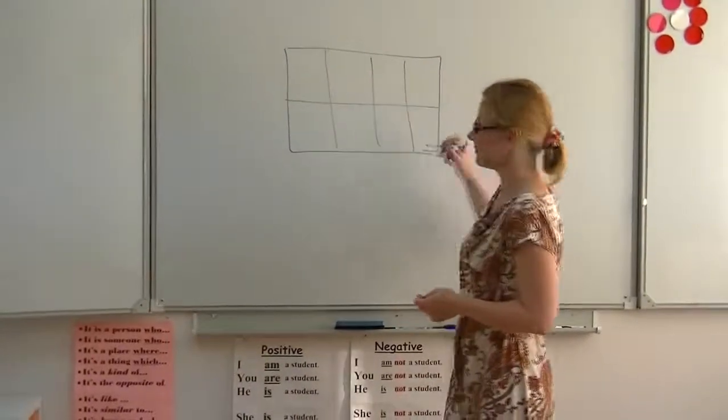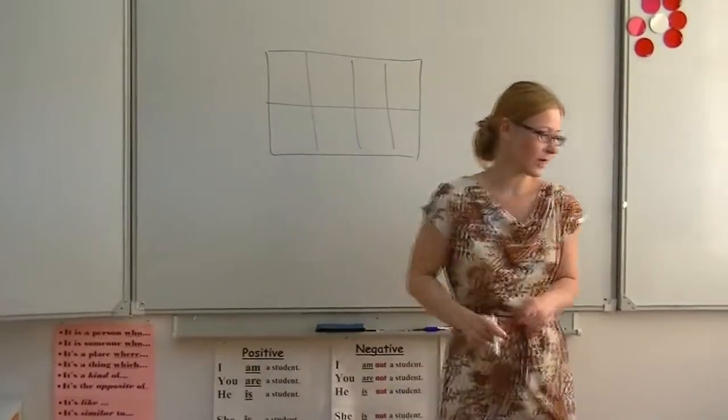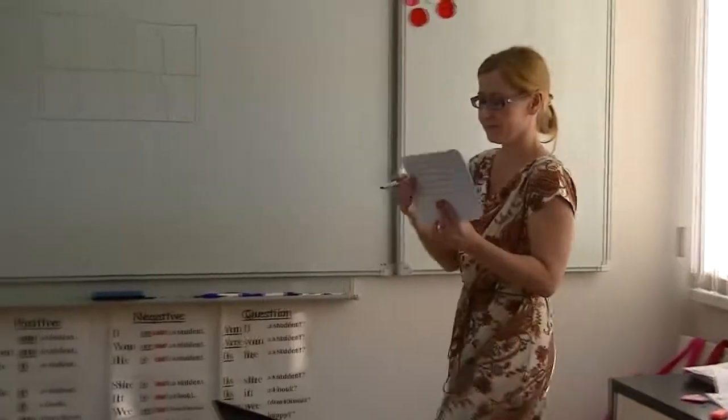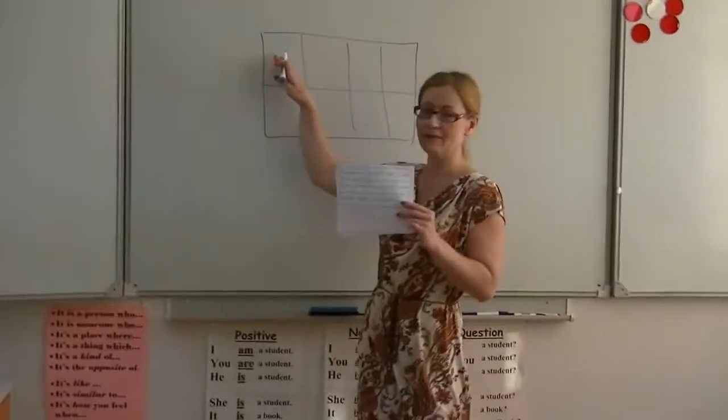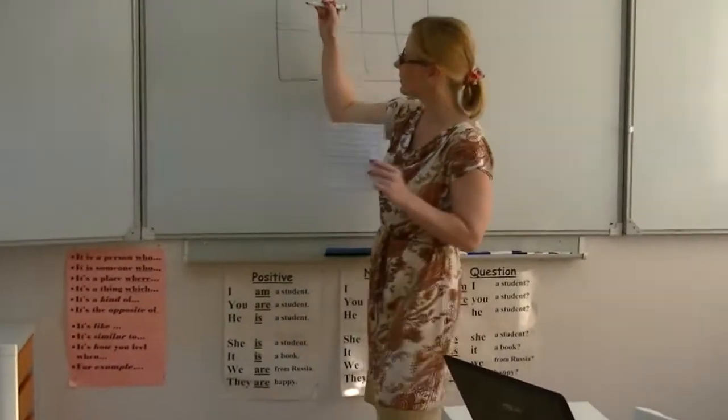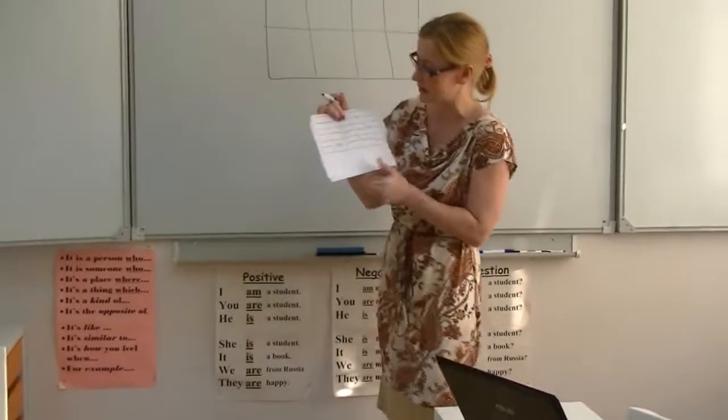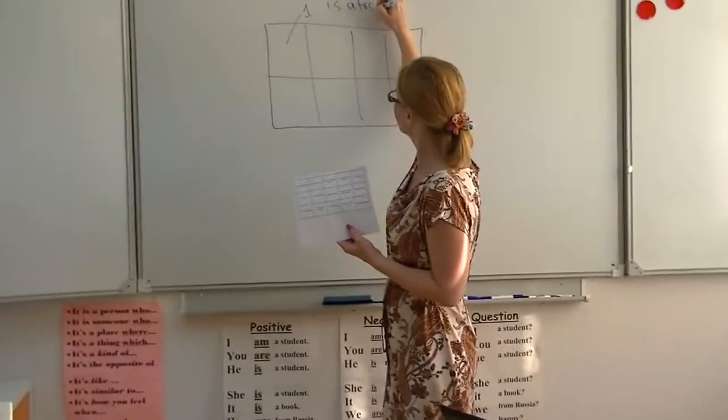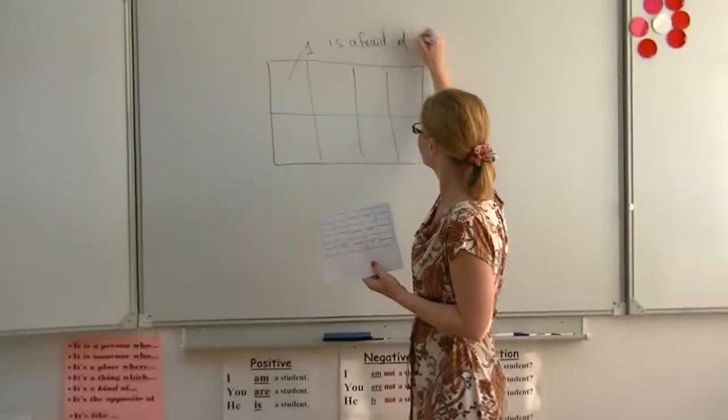Small squares here. In every square you are going to have these squares. In every square you have a sentence. For example, in square number one you have this sentence: is afraid of spiders.